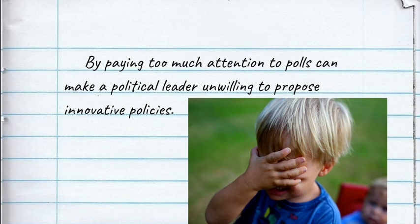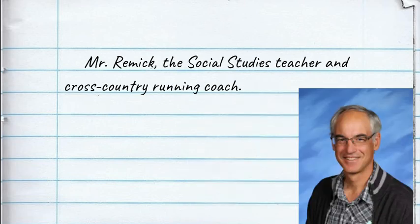Sometimes you're probably going to realize you've written a sentence fragment. Let's take a look at some fragments and decide what it would take to make them complete sentences. 'Mr. Remick, the social studies teacher and cross-country running coach.' It's pretty clear who we're talking about, but there's nothing happening in this sentence. Let's add a B verb: 'Mr. Remick is the social studies teacher and cross-country running coach.' If all you're trying to do is describe someone or something, don't forget those B verbs.